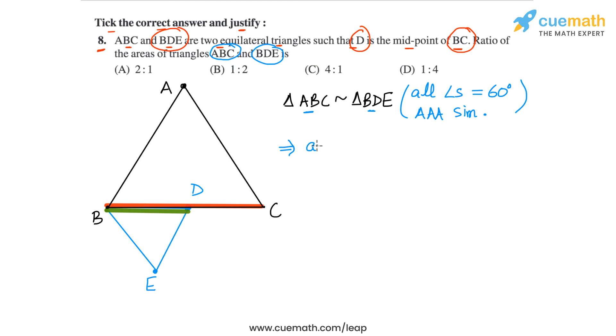This similarity means that the area of triangle ABC by area of ABE, this ratio, we can write as the square of ratio of corresponding sides. So let's take the corresponding sides as BC in the first triangle and BD in the second triangle. So we can say BC by BD square.